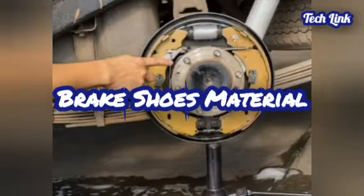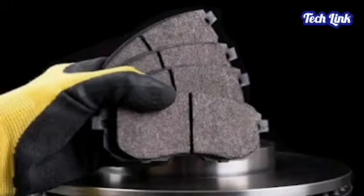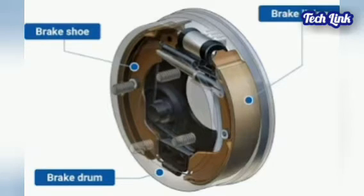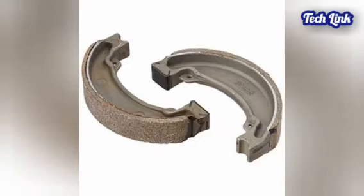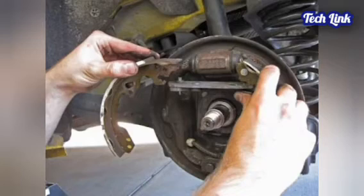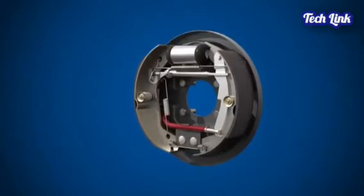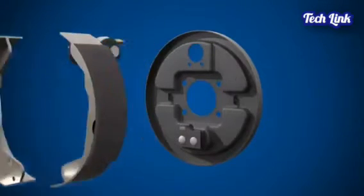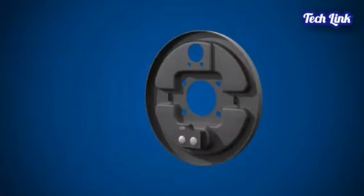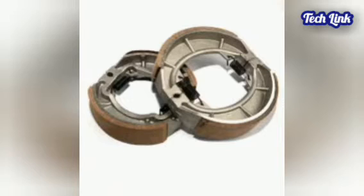Brake shoe material, unlike brake pads which are more recent technology, has a more traditional design with various linings pushing the drum. While asbestos, a naturally occurring fiber silicate mineral, was widely utilized, they eventually discovered that it had detrimental consequences. They now utilize synthetic aramid materials — heat-resistant and strong synthetic fibers — in place of asbestos.